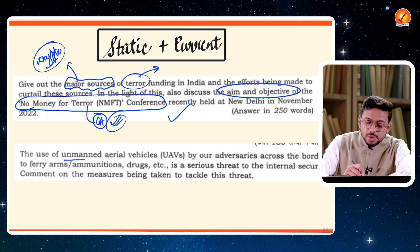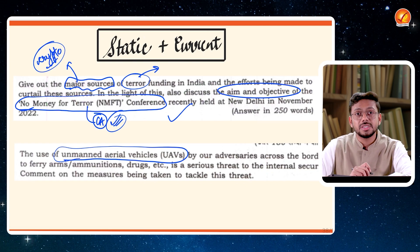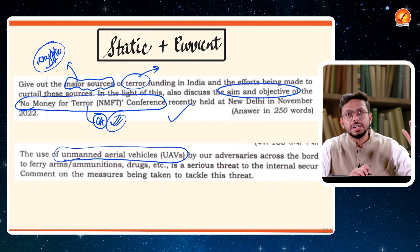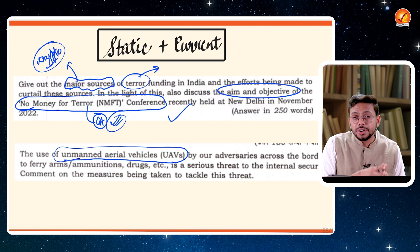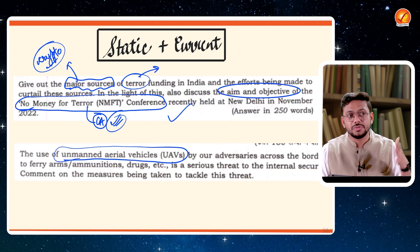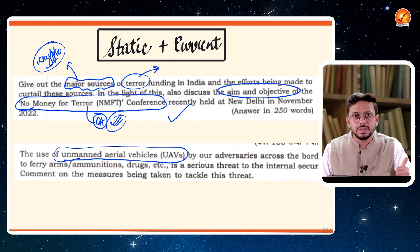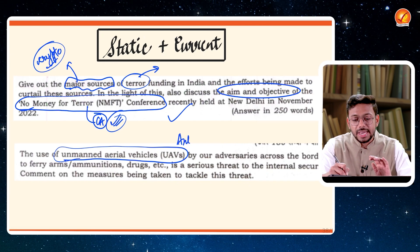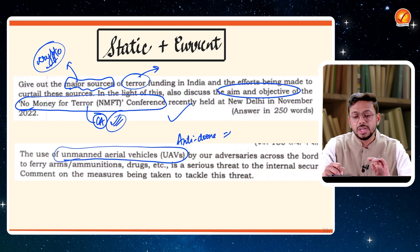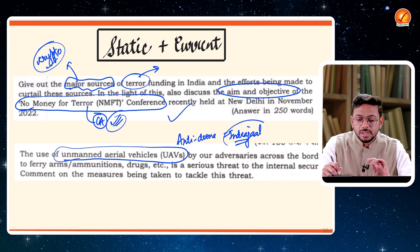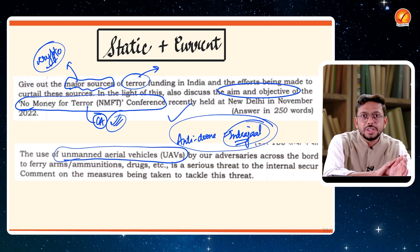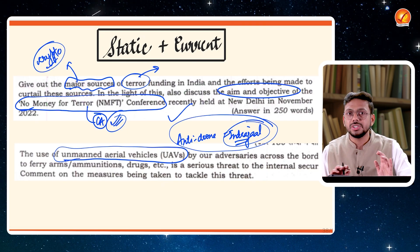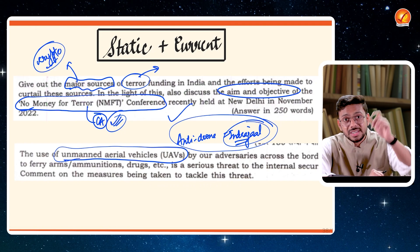Another question is on unmanned aerial vehicles — UAVs, drones. Drones have been in use for quite long, but their use for national security and internal security purposes has increased recently. We see weapons being dropped or supplied from across the border into India with the help of drones. India is trying to develop an anti-drone system called Indrajal. These things are coming in news. So static internal security topics combined with present-day security challenges require current affairs — it is a static plus current quality.